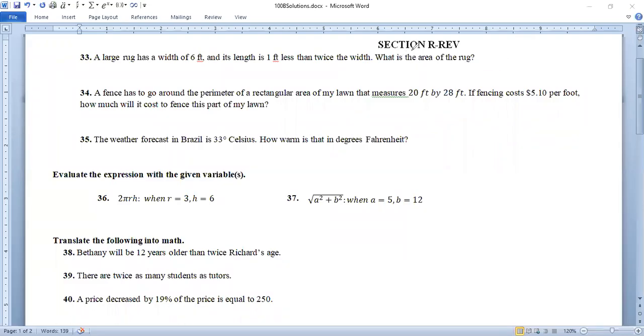Here we are in the section review of chapter R, so section R review. Numbers 33 through number 40, and we'll do the answers to those. It says a large rug has a width of six feet and a length of one foot less than twice the width. That's a little tricky. What's the area of the rug?